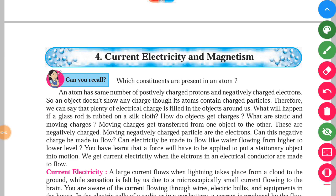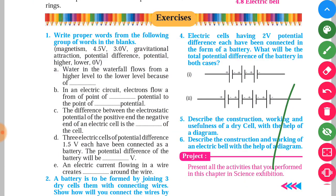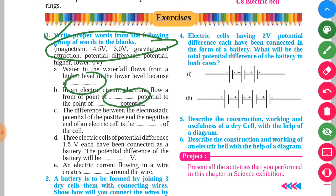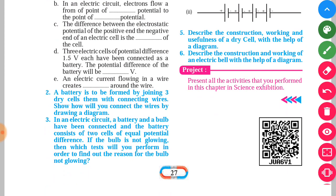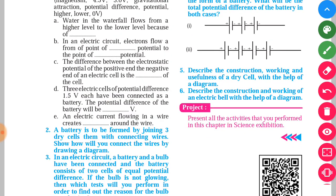Hi guys, welcome to the SSC Class of Tech, lesson number 4: Current Electricity and Magnetism, Class 8 Science. We have to look at the exercise of this lesson, so let's start today's video. This is the exercise of this lesson. There are six questions — the first is fill in the blanks, then second, third, fourth, fifth and sixth. All are very easy questions and we are going to look at them one by one.